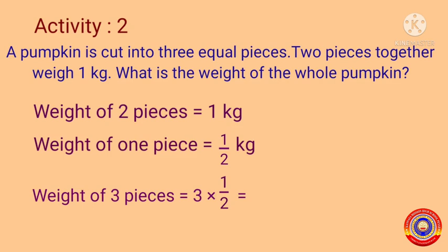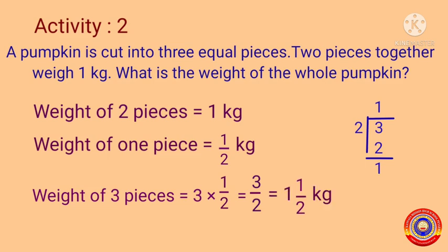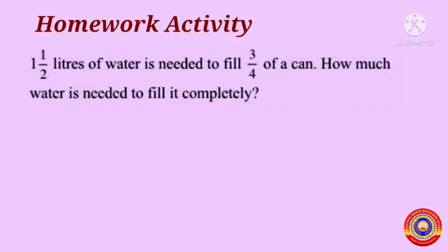Then the weight of three pieces is equal to three multiplied by one-by-two, that is equal to three-by-two. On dividing three-by-two, we write the number as a mixed fraction: one and one-by-two. Therefore the weight of three pieces is equal to one and one-by-two kilograms. Is it clear for you? Here is a homework activity for you; do it well.